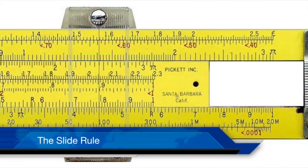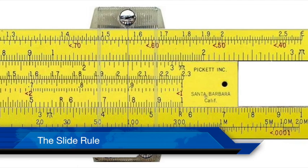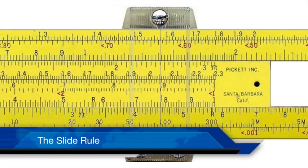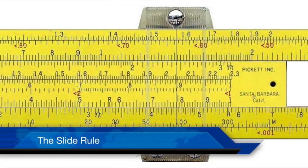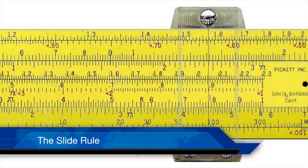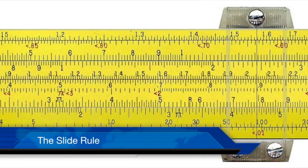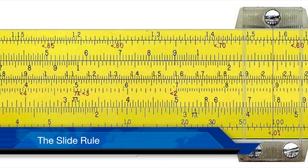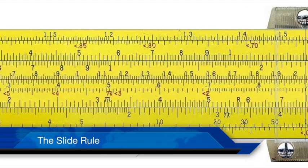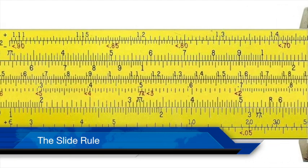The slide rule was invented by William Oughtred. It was used for multiplication and division. The slide rule has a set of fixed markings or scales for performing complex calculations with ease.